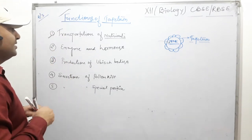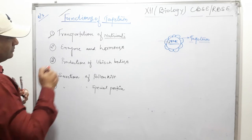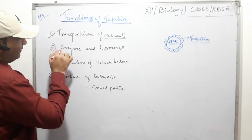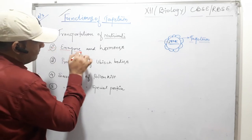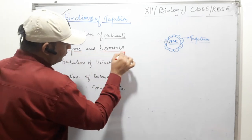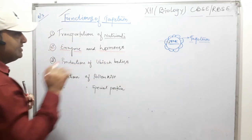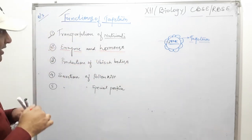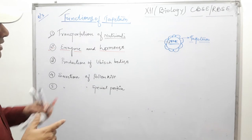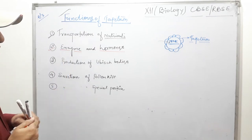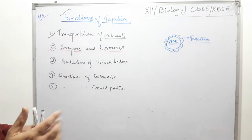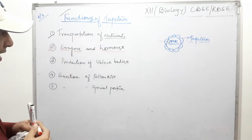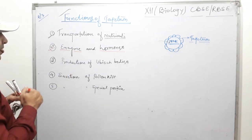The second function is secretion of enzymes and hormones. Some enzymes and hormones are secreted by the tapetum for the production of microspores and for plant development.